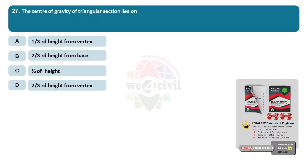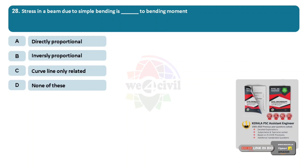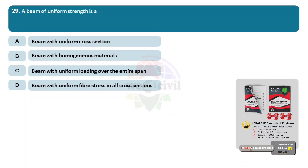Question 27: The center of gravity of a triangular section lies on? Options: A, one-third height from vertex. B, two-third height from base. C, half of the height. D, two-third height from vertex. Answer: Option D, two-third height from vertex. Question 28: Stress in a beam due to simple bending is dash to bending moment. Options: A, directly proportional. B, inversely proportional. C, curve line only related. D, none of these. Answer: Option A, directly proportional. Question 29: A beam of uniform strength is? Option A, beam with uniform cross-section. B, beam with homogeneous materials. C, beam with uniform loading over the entire span. Option D, beam with uniform fiber stress in all cross-sections. Answer: Option D, beam with uniform fiber stress in all cross-sections.